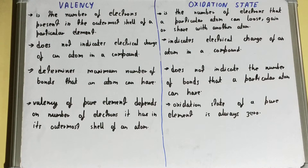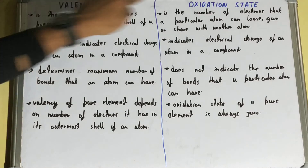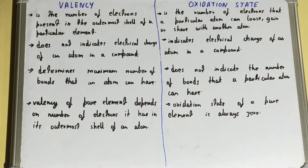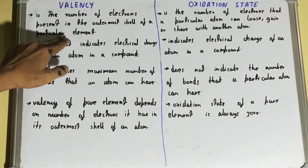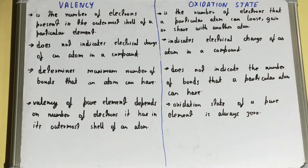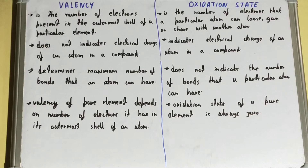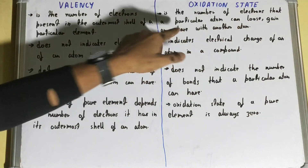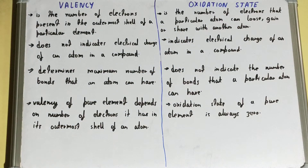In this video I'll be helping with the difference between valency and oxidation state. Valency is the number of electrons present in the outermost shell of a particular element. Oxidation state, on the other hand, is the number of electrons that a particular atom can lose, gain, or share with another atom — basically the electrons that can be involved in interaction with another atom.